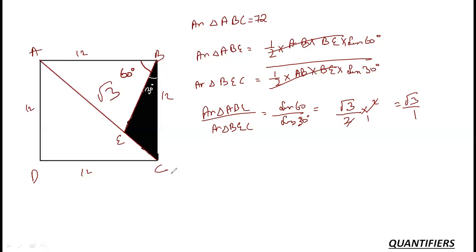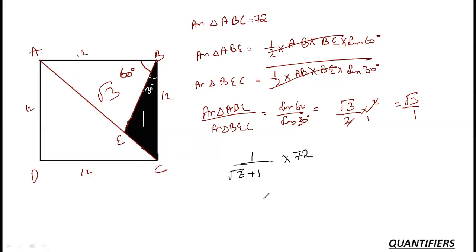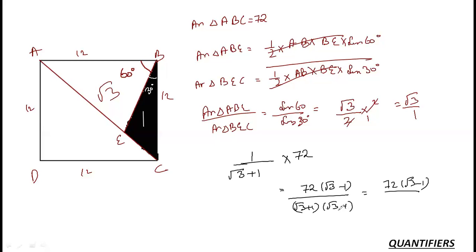So area(ABE) : area(BEC) = √3 : 1. The total area of triangle ABC is 72. Dividing 72 in the ratio √3 : 1, the area of triangle BEC = 1/(√3 + 1) × 72. Rationalizing: 72 × (√3 − 1) / ((√3 + 1)(√3 − 1)) = 72(√3 − 1) / 2 = 36(√3 − 1). So the required shaded area is 36(√3 − 1).